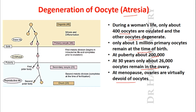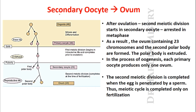At menopause, the ovaries are virtually devoid of oocytes. To summarize the degeneration: at birth about one million primary oocytes are present, at puberty the number reduces to 200,000, at 30 years only 26,000 oocytes remain, and at menopause there are no oocytes. This process of degeneration is known as atresia.